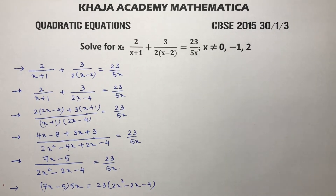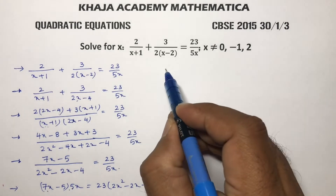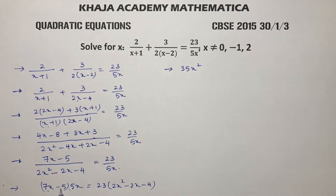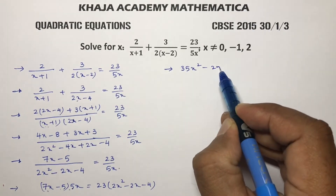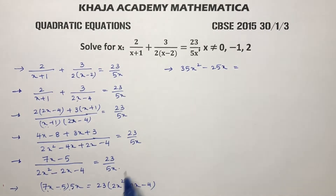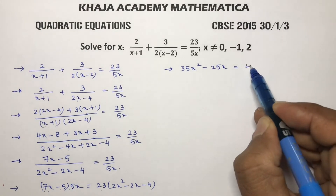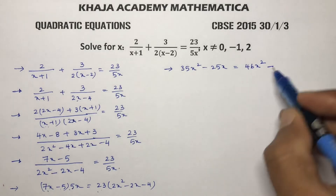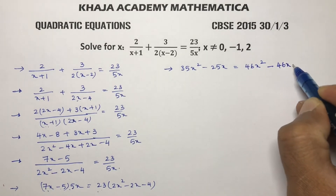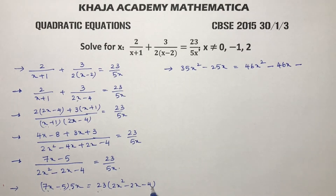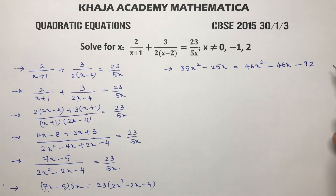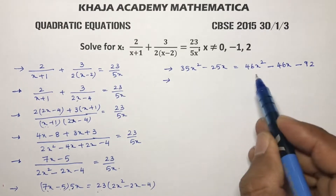Now if we multiply: 7x times 5x gives 35x squared, minus 5 times 5 gives minus 25x. On the right side: 23 times 2 is 46x squared, 23 times 2x is 46x, and 23 times 4 is 92. So we get 35x squared minus 25x equals 46x squared minus 46x minus 92.